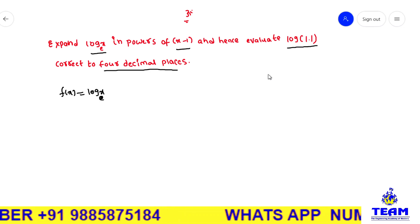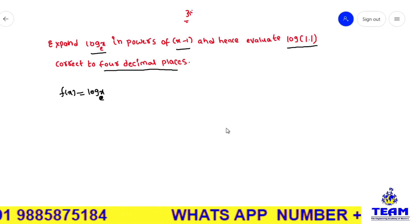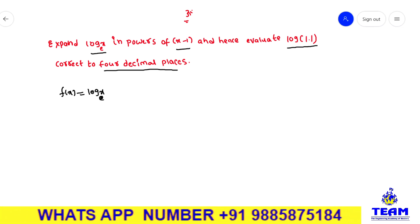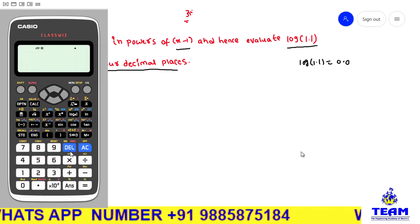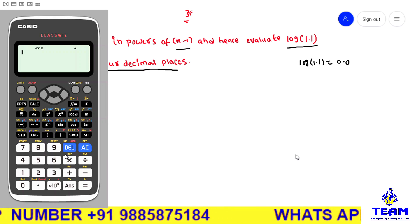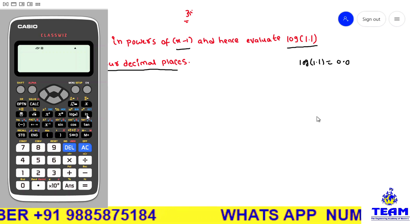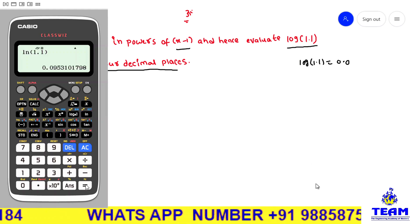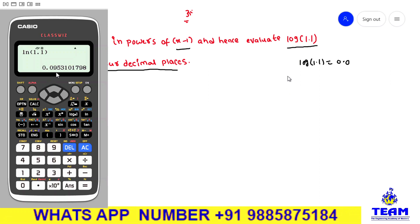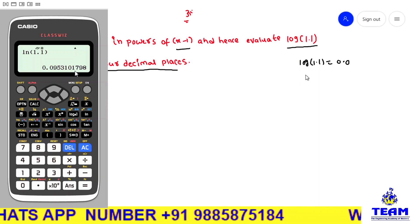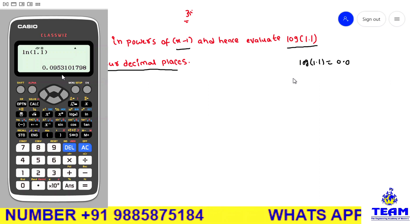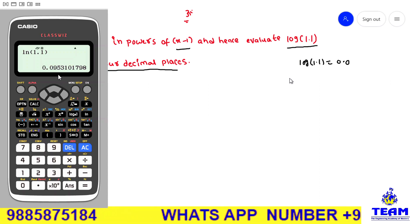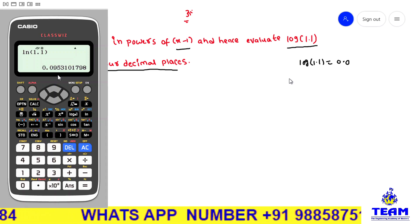First I am verifying the log(1.1) value by using the calculator. We are finding log(1.1) by using the calculator — log base e is given, so you press ln(1.1), which is equivalent to 0.0953101798. Actually, up to 4 decimal places is all we require, so first note down this value. Later we will verify our result with the calculator.